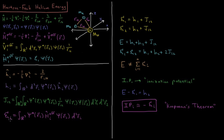The orbital energy epsilon-i is the expectation value of the effective Hamiltonian for a given electron — its one-electron operator plus the mean field from the other electrons. For electron 1, the orbital energy epsilon-1 equals its one-electron energy H1 (kinetic plus nuclear attraction) plus the repulsion from electron 2, the J12 integral. For electron 2, epsilon-2 equals H2 plus J12. If you swap the indices r1 and r2 in the integral, you get the same value, so J12 appears in both orbital energies.